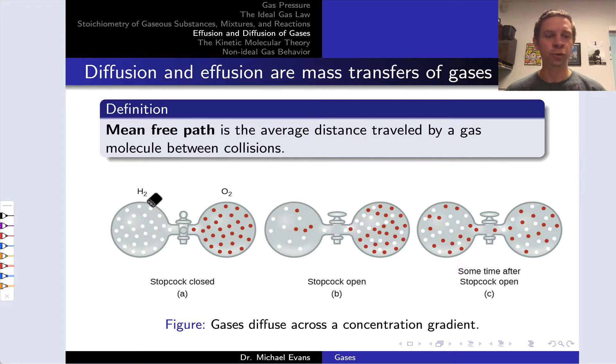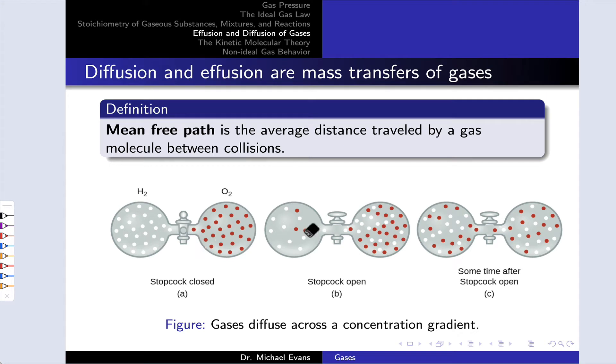Imagine we had two different gases, H2, the white circles, and O2, the red circles, in two separate containers linked via a closed stopcock.